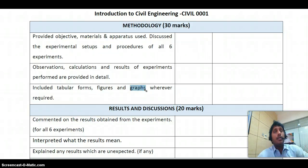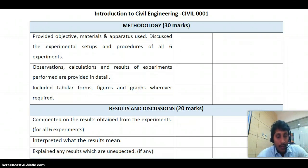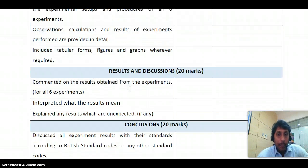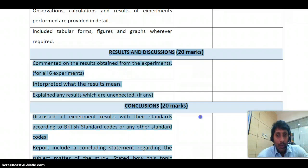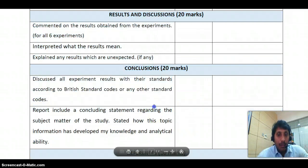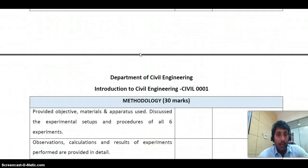For Experiment 3 (sieve analysis), you must plot a semi-logarithmic graph. Many students are not plotting it correctly. A video is available on Canvas explaining how to plot a semi-logarithmic graph. The results and discussion section carries 20 marks and is the most important part, as the remaining sections can largely be obtained from the lab manual.